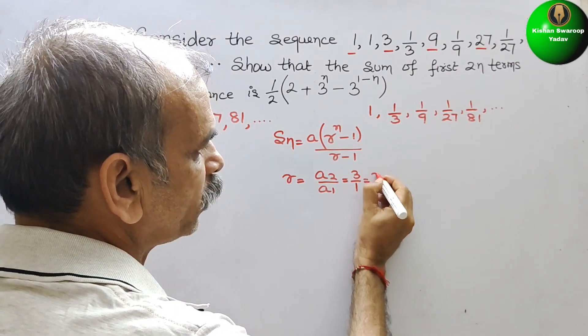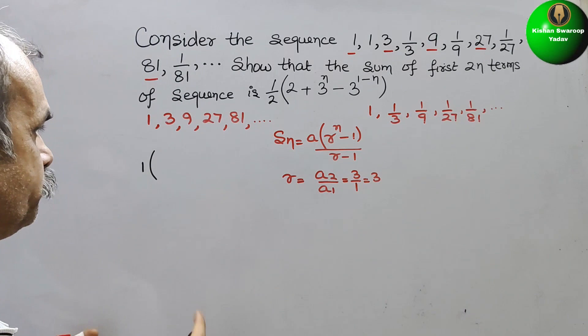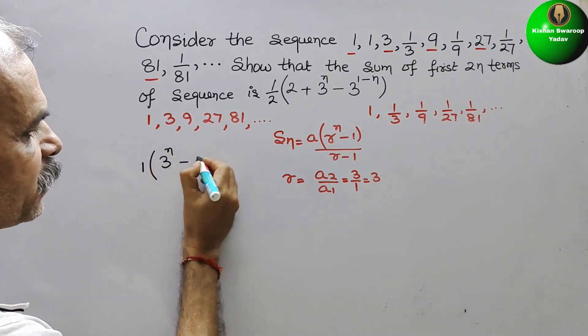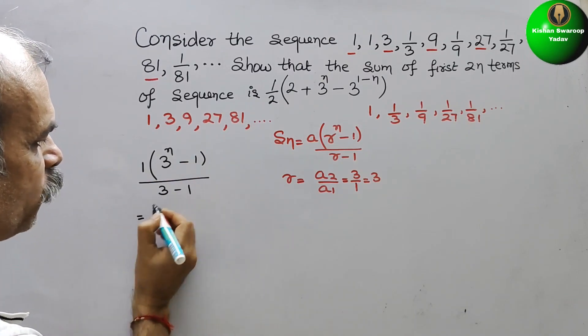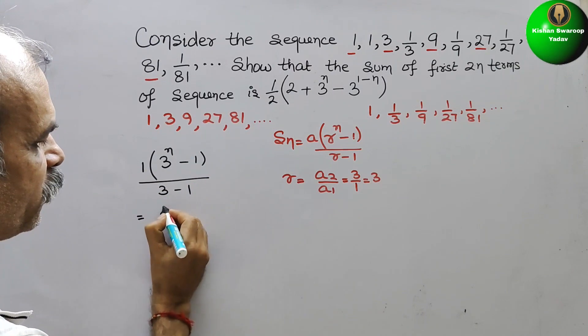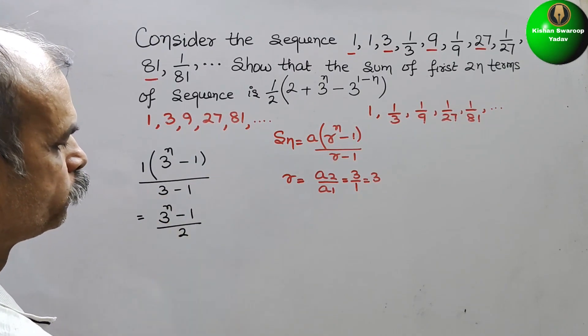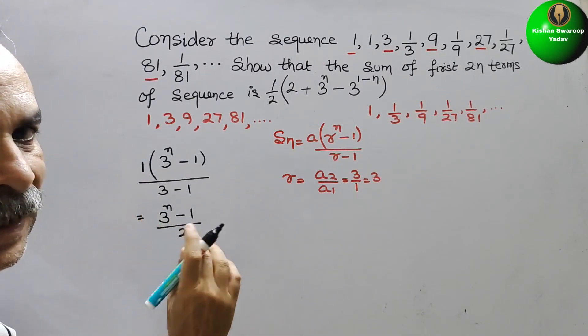r is 3. So 3^n - 1 by 3 - 1, that is equal to 2. So we can say it is (3^n - 1)/2. So this is first S_n.